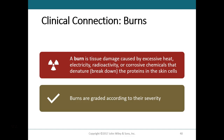A burn is tissue damage caused by excess heat, electricity, radioactivity, or corrosive chemicals that denature or break down proteins in the skin. Some burns destroy the skin's important contributions to homeostasis, meaning the skin can no longer protect the body — microbes get in, dehydration occurs, and we lose the ability for thermoregulation. Burns are classified according to their severity.